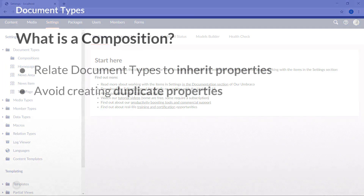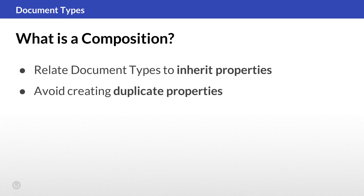Now, what is a composition? Simply put, they are a way to relate document types to inherit properties from each other. This avoids us having to create duplicates of the same properties on multiple document types.